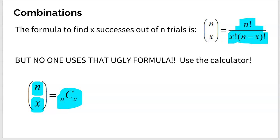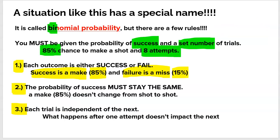That's an example of a binomial distribution. I can't emphasize enough the setup: you must be given a probability of success and a set number of trials, and you must meet those three rules. Hopefully that was a quick, painless explanation for how to work with binomial distributions and binomial probabilities.